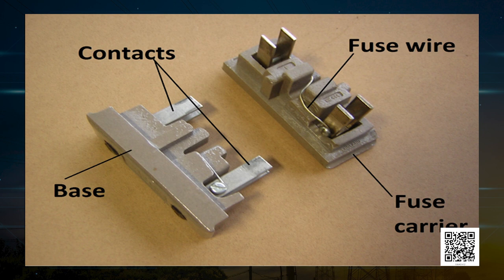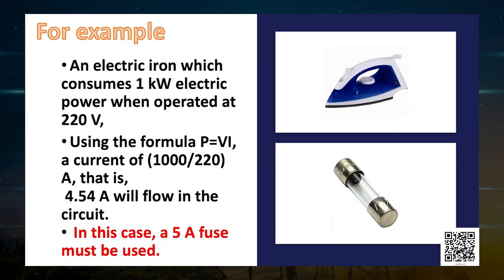The fuses used for domestic purposes are rated as 1 ampere, 2 ampere, 3 ampere, 5 ampere, 10 ampere, etc. For an electric iron which consumes 1 kilowatt of electric power when operated at 220 volts, we use the formula power equals voltage into current. Substituting the values, the current is 1000 divided by 220 ampere, which comes out to be 4.54 ampere flowing in the circuit. So in this case, a fuse of 5 ampere must be used.